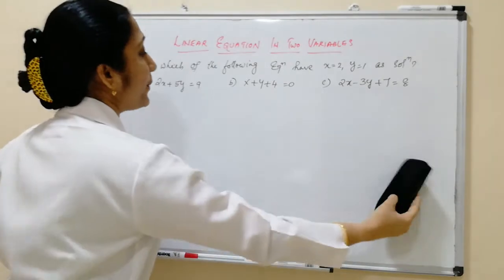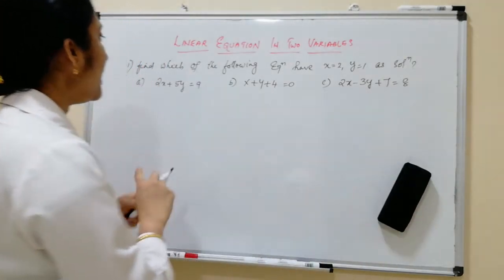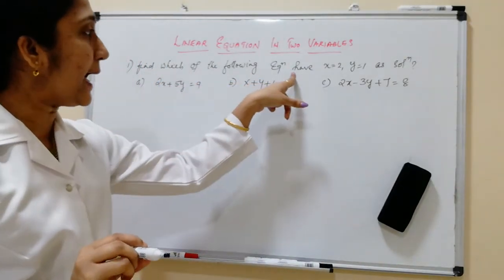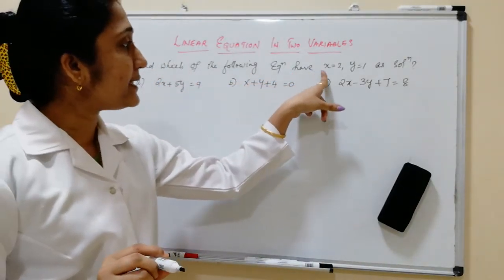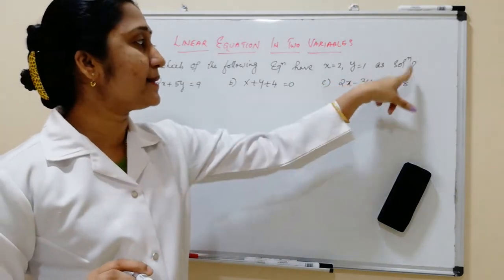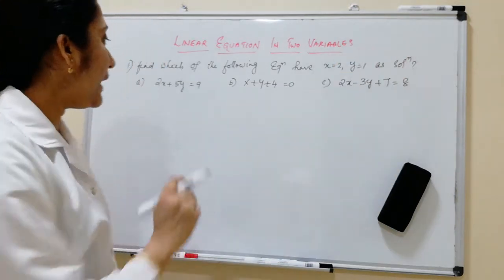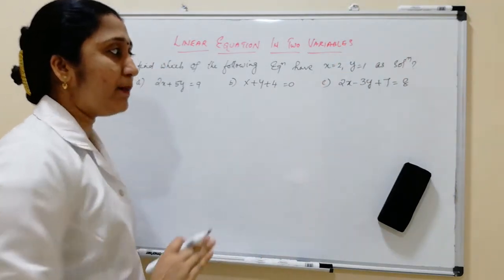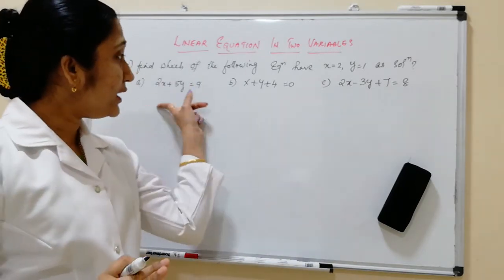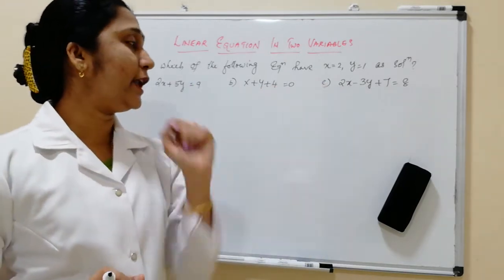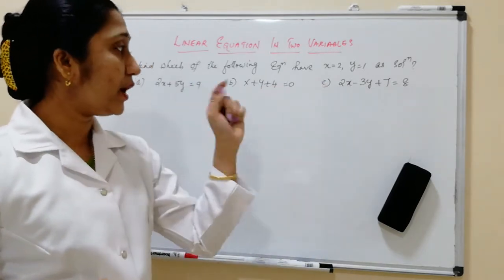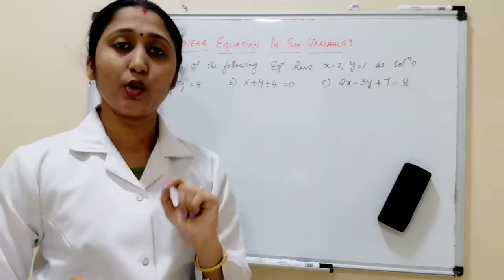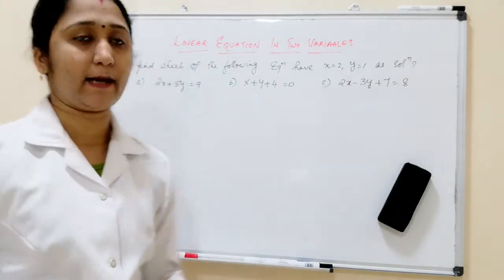Let us start the problem. Find which of the following equations have X equal to 2 and Y equal to 1 as a solution. There are three problems given here, and we need to check which of these three linear equations have these two values as the solution.